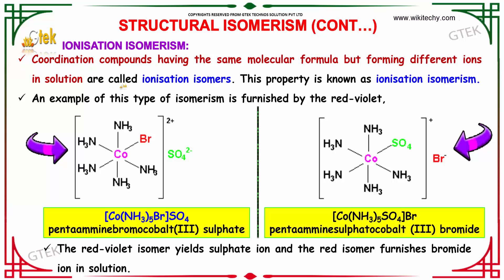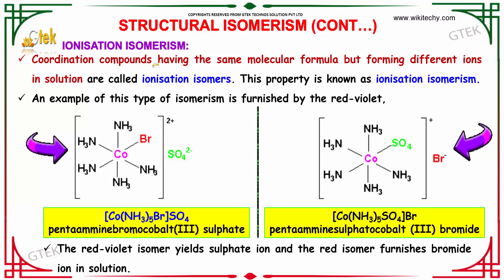Now let's move on to ionization isomerism. Over here, sulfate is out and bromine is in; sulfate is in and bromine is out. This is ionization isomerism. Coordination compounds having the same molecular formula but forming different ions in solution are called ionization isomers, and this property is known as ionization isomerism.